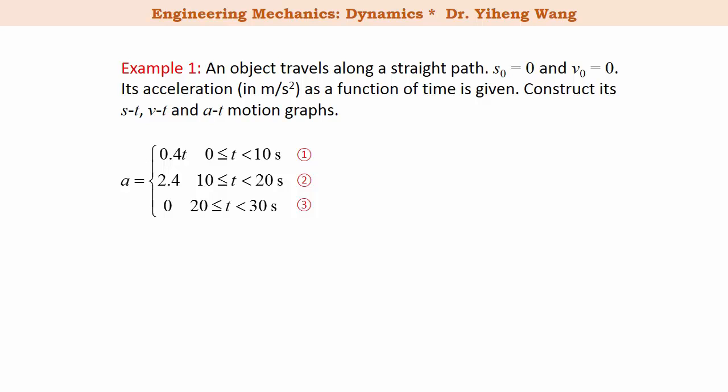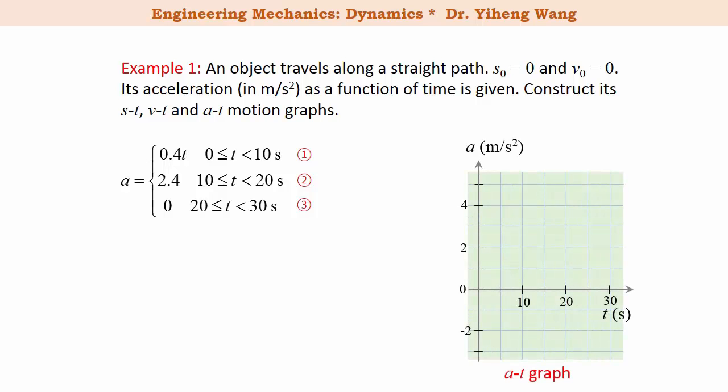For the first example, we are given the piecewise function of acceleration as a function of time. We also know that the initial position and initial velocity are both zero, and we are asked to construct the s-t, v-t, and a-t graphs. The a-t graph is easiest to sketch since the function is given. For the time period 0 to 10 seconds, we sketch the first equation a equals 0.4 times t, which is a linear function, graphed up to t equals 10 seconds.